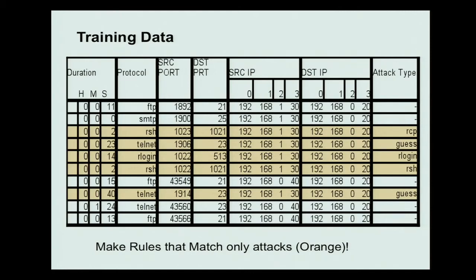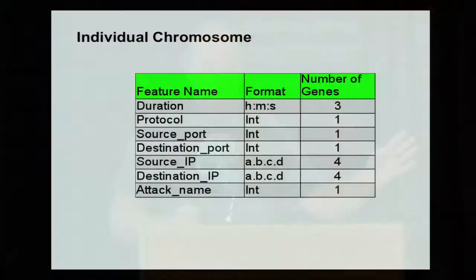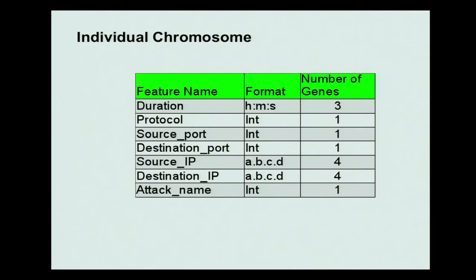Here's an example of the training data, or the audit data actually. If you look at this here, you can see that these are attacks, the ones that are in the orange, the attack type. And then we have these attributes here. Now this is actually a list of the attributes, and this is what covers the chromosome. This is the rules that we automatically generate.